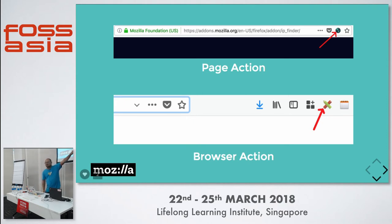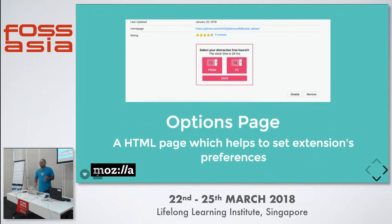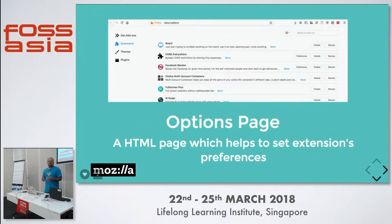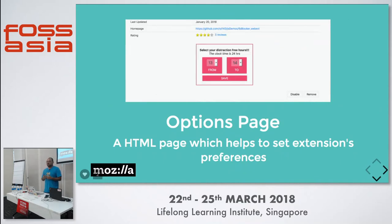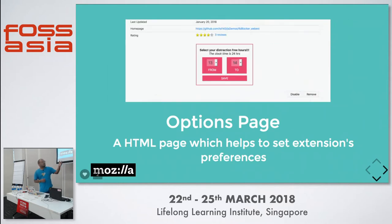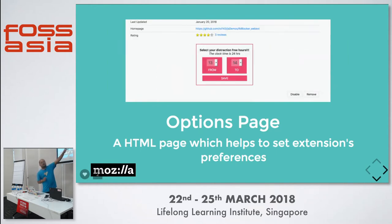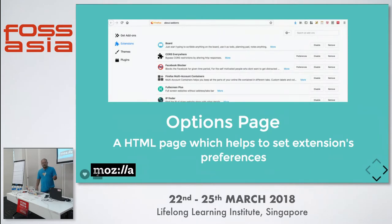Toolbar buttons in any add-on — that is called browser action. Then there's the options page. Many add-ons have preferences. As an extension developer, I can classify my options. For example, I had an add-on — Facebook blocker. Sometimes I wanted to be very strict with myself, so I blocked Facebook for a while. I could set the number of hours. That can be done via the options page.